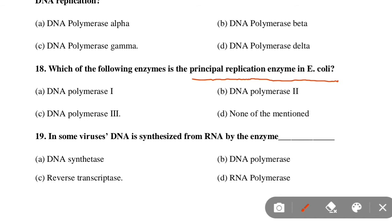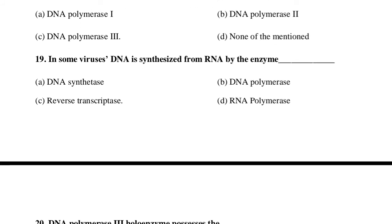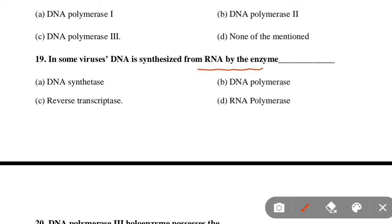Next MCQ: Which of the following enzymes is the principal replication enzyme in E. coli? Option A: DNA polymerase I, Option B: DNA polymerase II, Option C: DNA polymerase III, Option D: None of the mentioned. Option C is correct — DNA polymerase III. Next MCQ: In some viruses, DNA is synthesized from RNA by the enzyme — DNA synthetase, DNA polymerase, reverse transcriptase, or RNA polymerase? Option C is correct — reverse transcriptase.